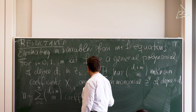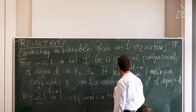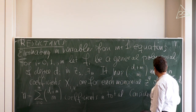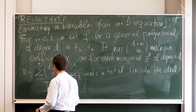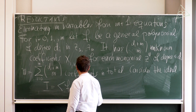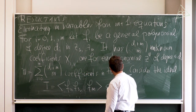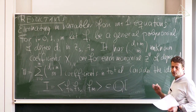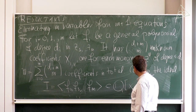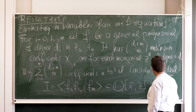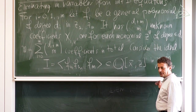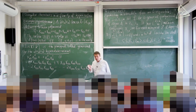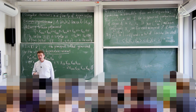Let N be the total number of coefficients: the sum over i from 0 to M of (dᵢ+M choose M). We have this many coefficients in total. The ideal I in the polynomial ring Q[x̄, z̄] in M + N variables is generated by F₀, F₁,…,FM. Let M be a small number like 3 — so I'll make four polynomials F₀, F₁, F₂, F₃.